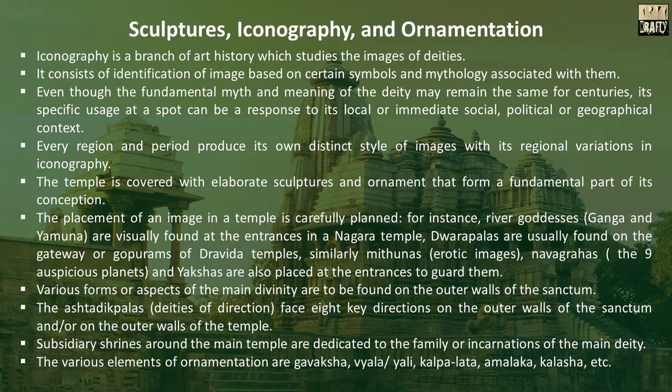Various forms or aspects of the main divinity are to be found on the outer walls of the sanctum. The Ashtadikapalas face eight key directions on the outer walls of the sanctum or on the outer walls of the temple. Subsidiary shrines around the main temple are dedicated to the family or incarnations of the main deity. The various elements of ornamentation include Gavaksha, Vyala, Yali, Kalpalata, Amalaka, Kalasha, etc.